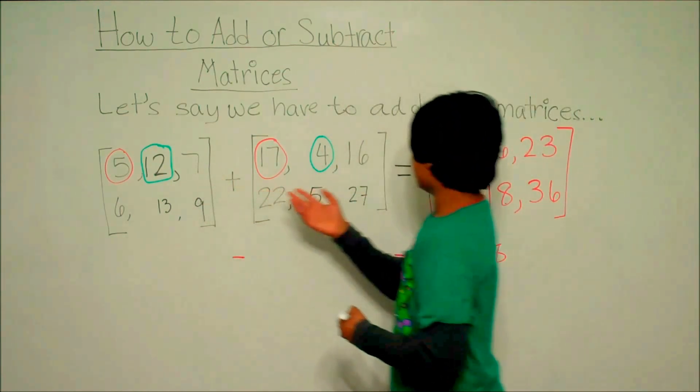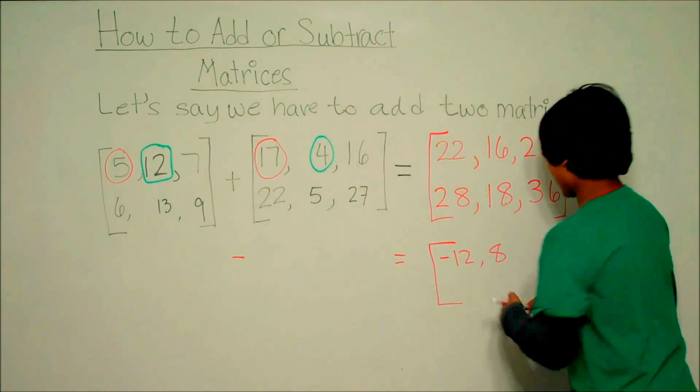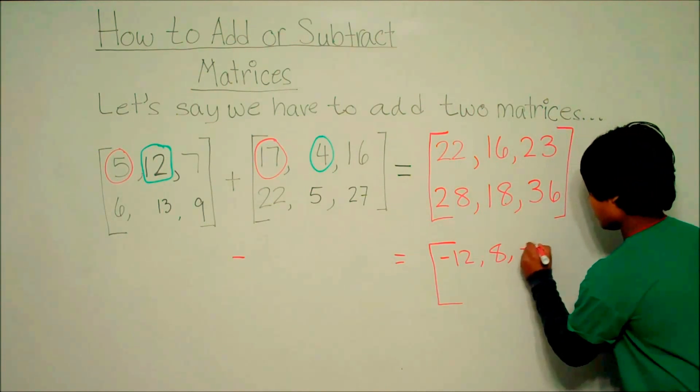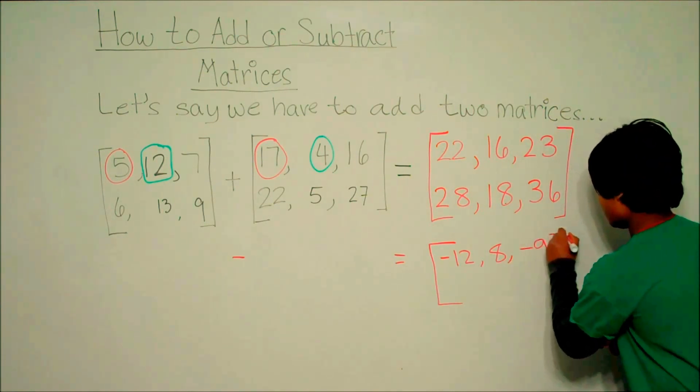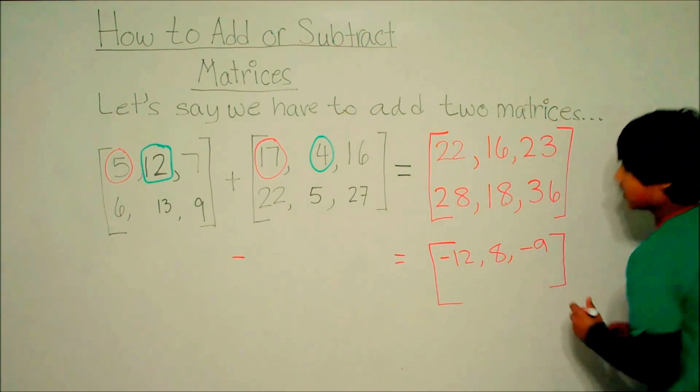7 minus 16 is negative 9. And now, we're going to the second row.